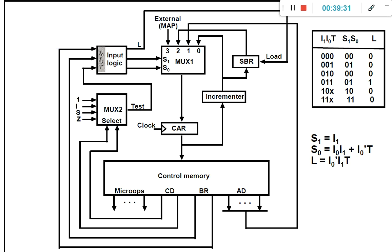Compared to other concepts in computer organization, microprogrammed control is somewhat complex; however, if you think logically and make appropriate assumptions, it becomes easy to understand. With this we have completed the fourth unit, first part — microprogrammed control — successfully. We will continue with the fourth unit, second chapter, from the next class onwards.